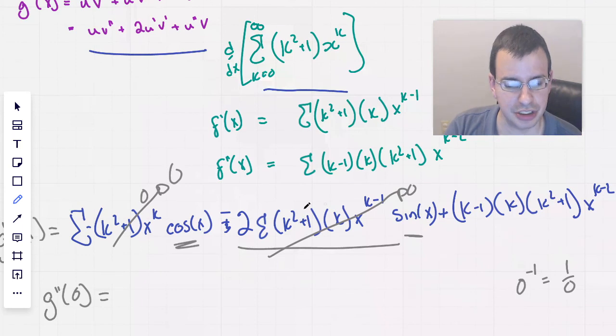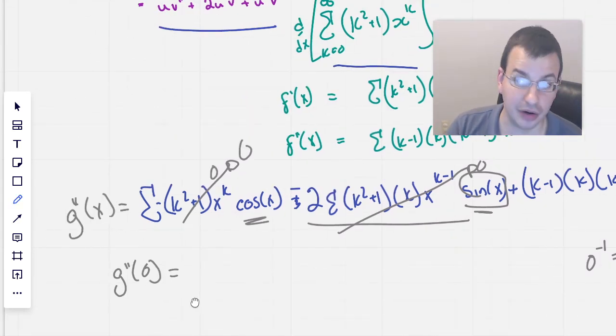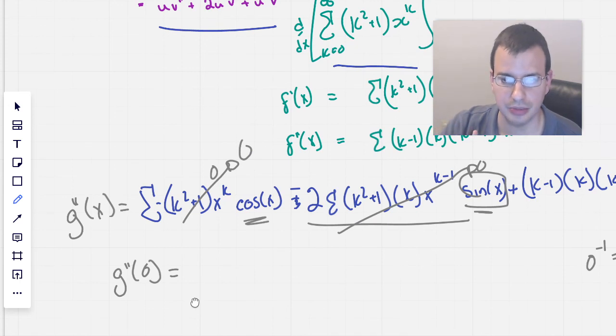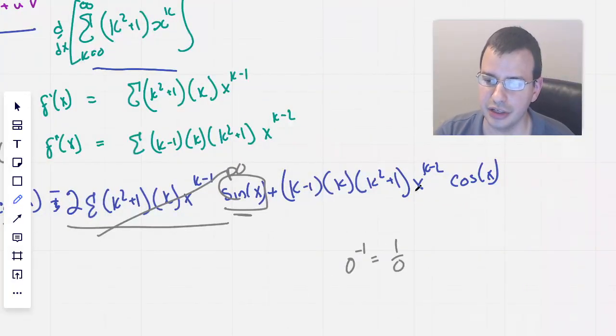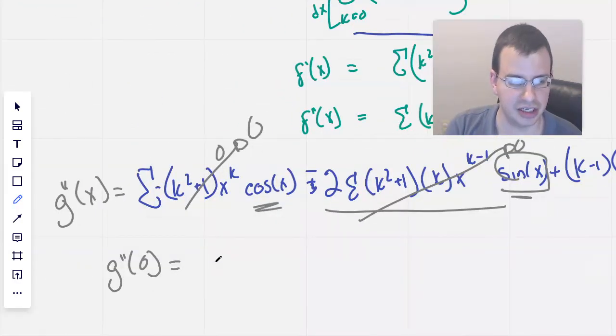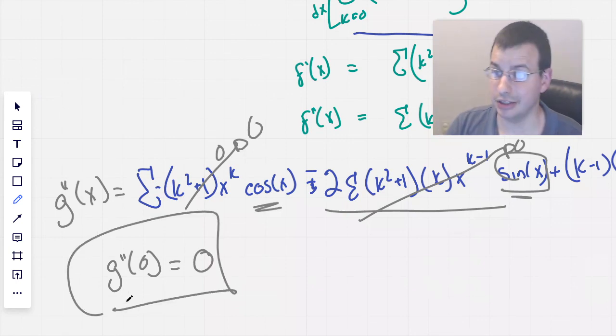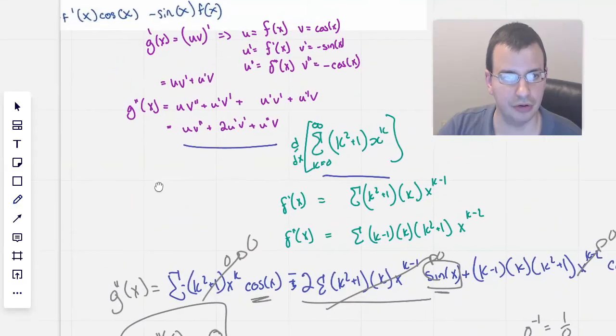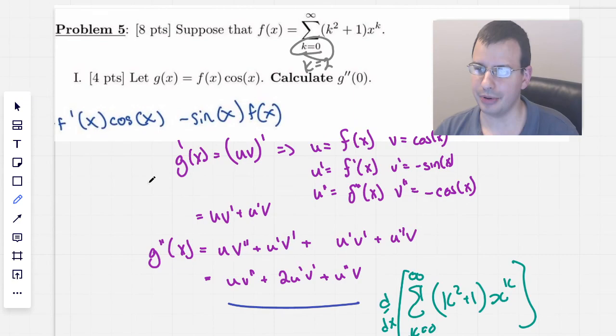But anyway, this part goes away because we have sine of 0. This one, we have 0 to whatever k is. And whatever k is doesn't matter because 0 to any power is going to be 0. And so that's going to go to 0. Over here, we're also going to have 0 to a power. So that's also going to go to 0. Therefore, I would say that g double prime of 0 equals 0. So that was a lot of work to kind of prove something that seemed almost trivial. Anyway, hope that thought process helped. I'll see you next time.